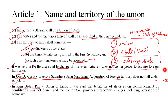In Ram Badan Rai v. Union of India, it was said that the territories of the state as on the commencement of the Constitution were not frozen, and the Constitution provides for prospective changes including alteration of boundaries. We will now see how alteration of boundaries works.